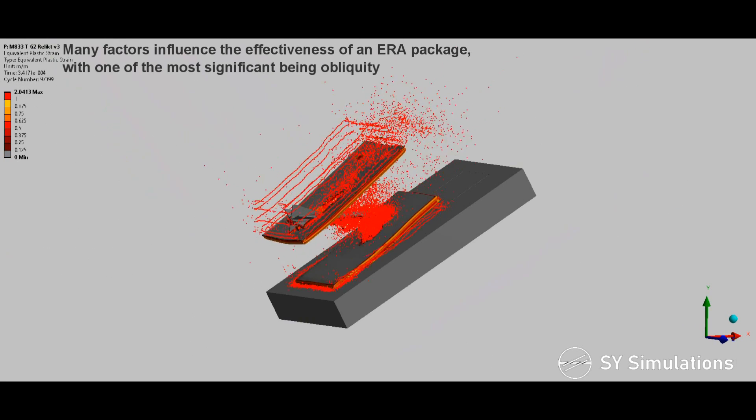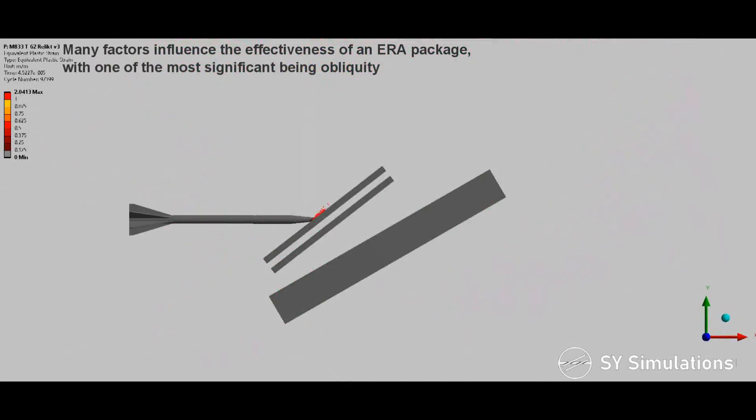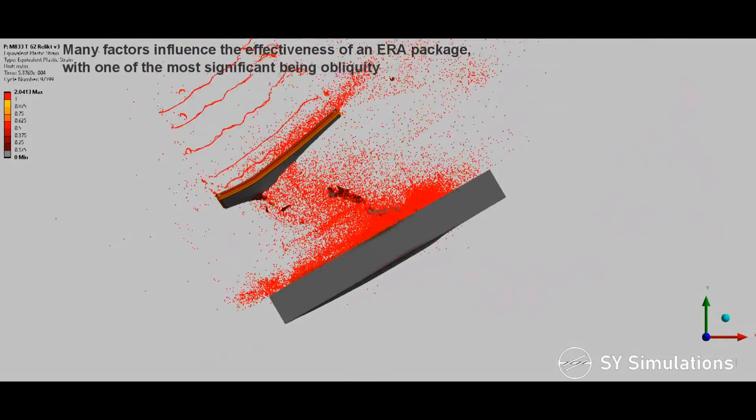Many factors influence the effectiveness of an explosive reactive armor package, with one of the most significant being obliquity.